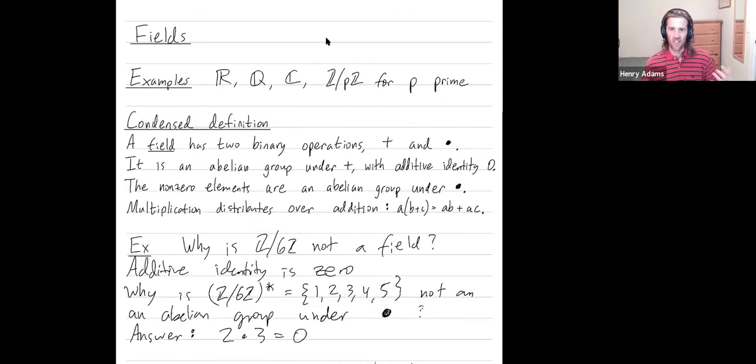So the point of this video was to just talk a little bit more about why Z mod pZ is a field for p prime. It relates to this Un notation that we've been using earlier in the class. Fields have addition, and then when you remove 0, you get an abelian group under multiplication, and that still works in Z mod pZ when p is prime, but it fails when p is not prime.